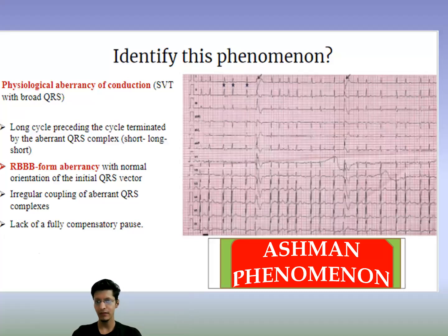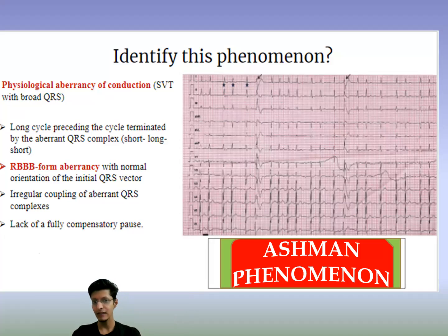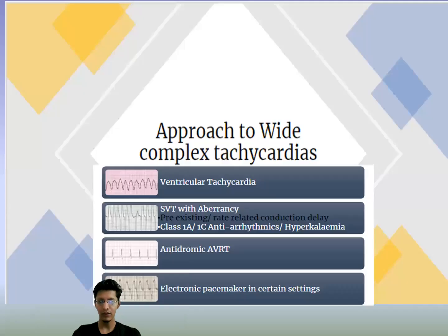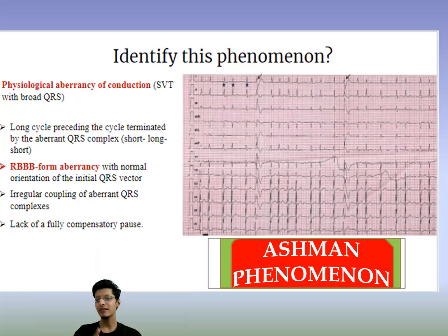On the ECG, you can see long cycles preceding cycles terminated by an aberrant QRS complex. There is RBBB-form aberrancy with normal orientation of initial QRS vector, but note the irregular heart rate, irregular coupling, and lack of a fully compensatory pause. This phenomenon is known as the Ashman phenomenon.